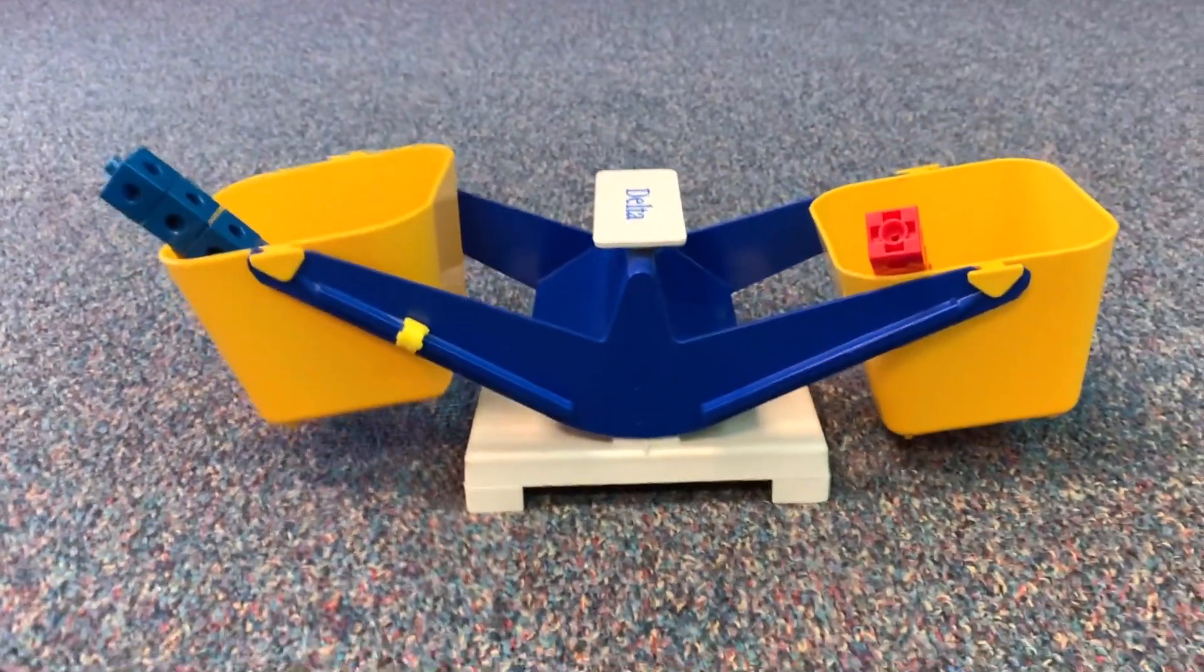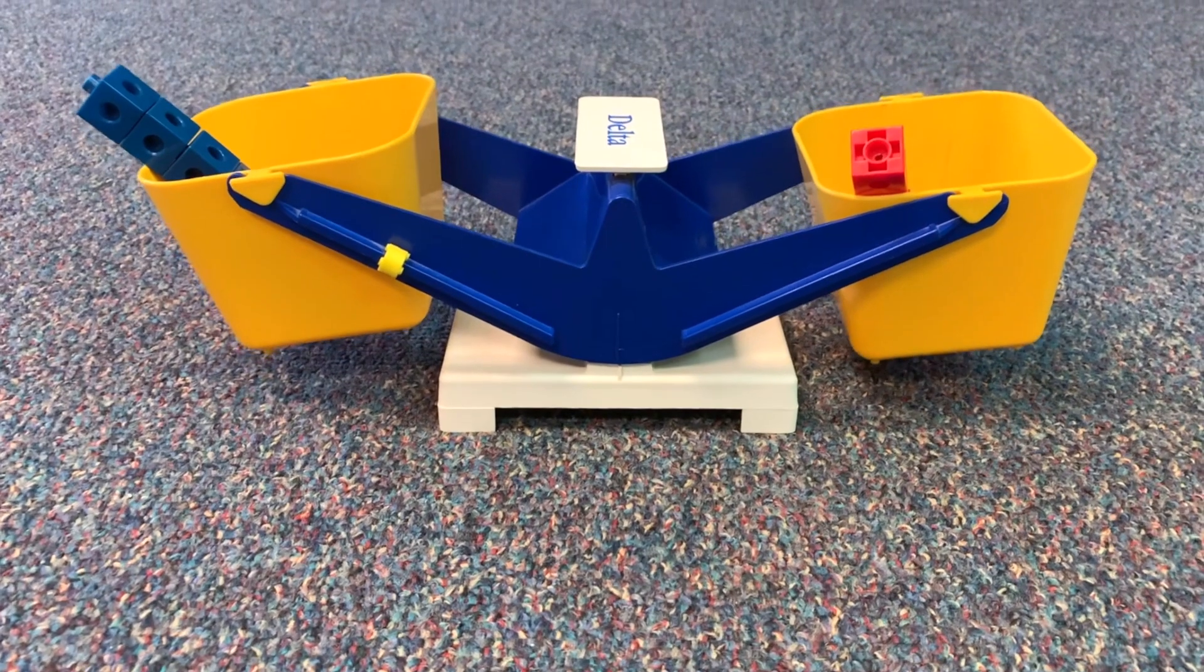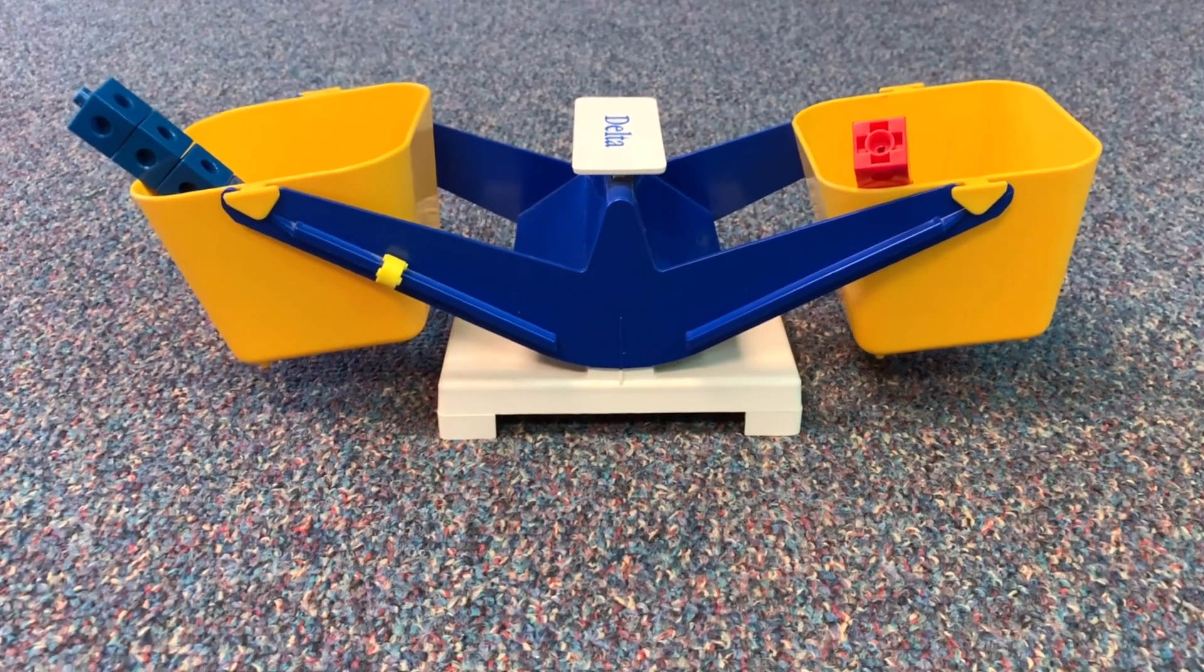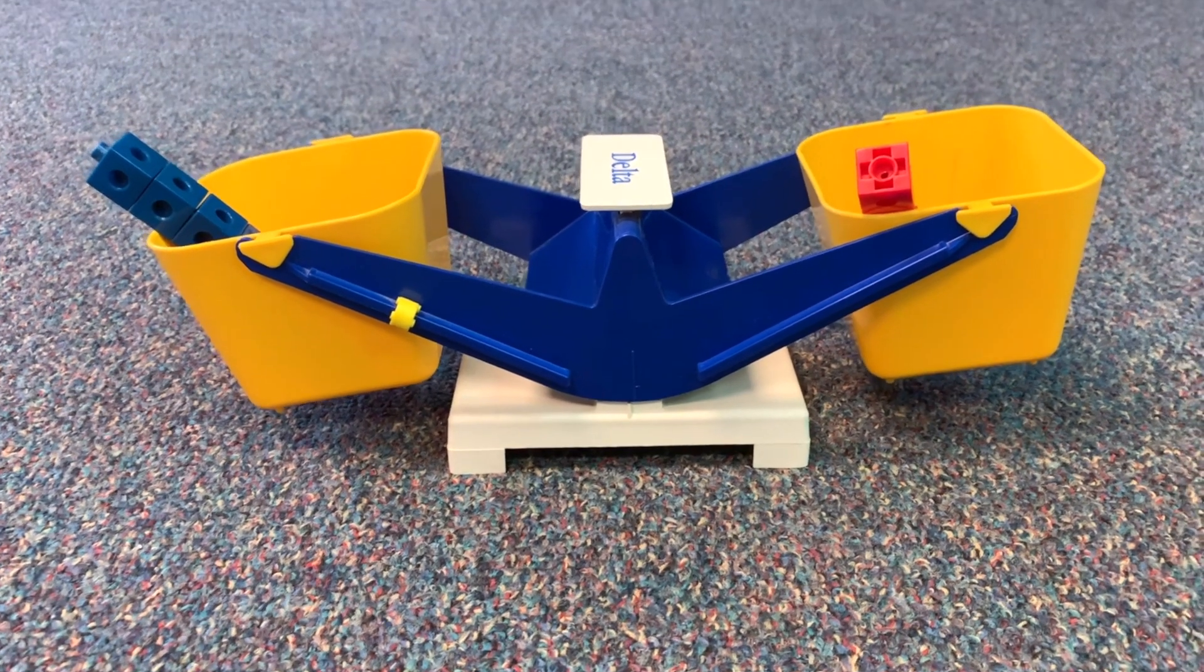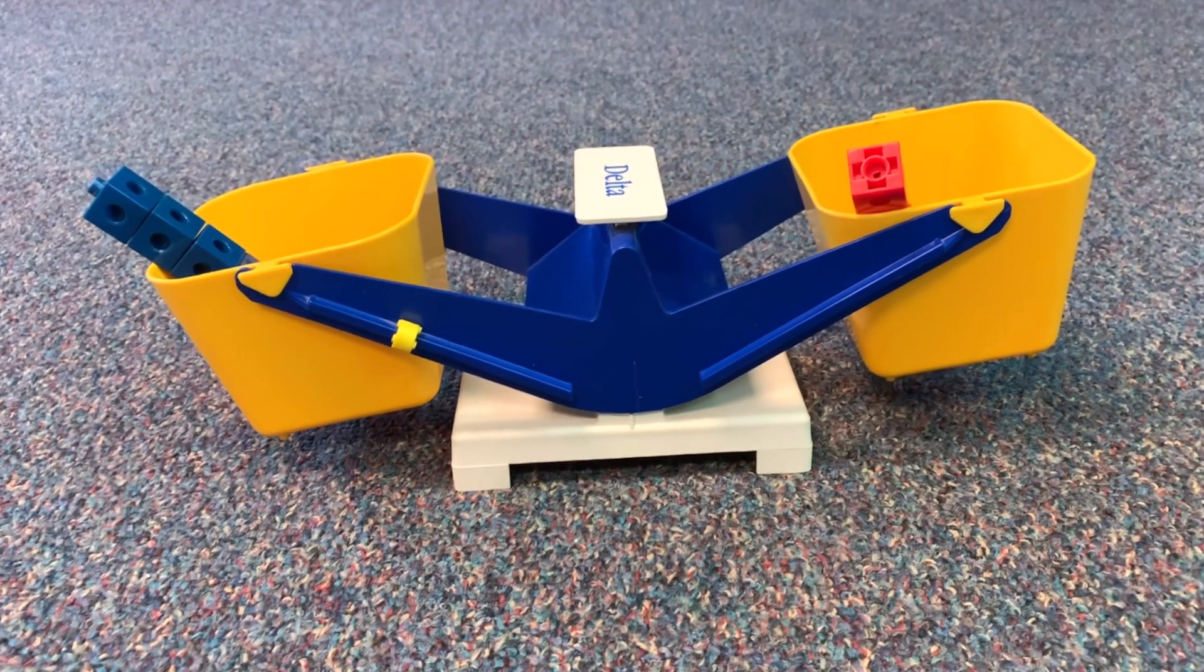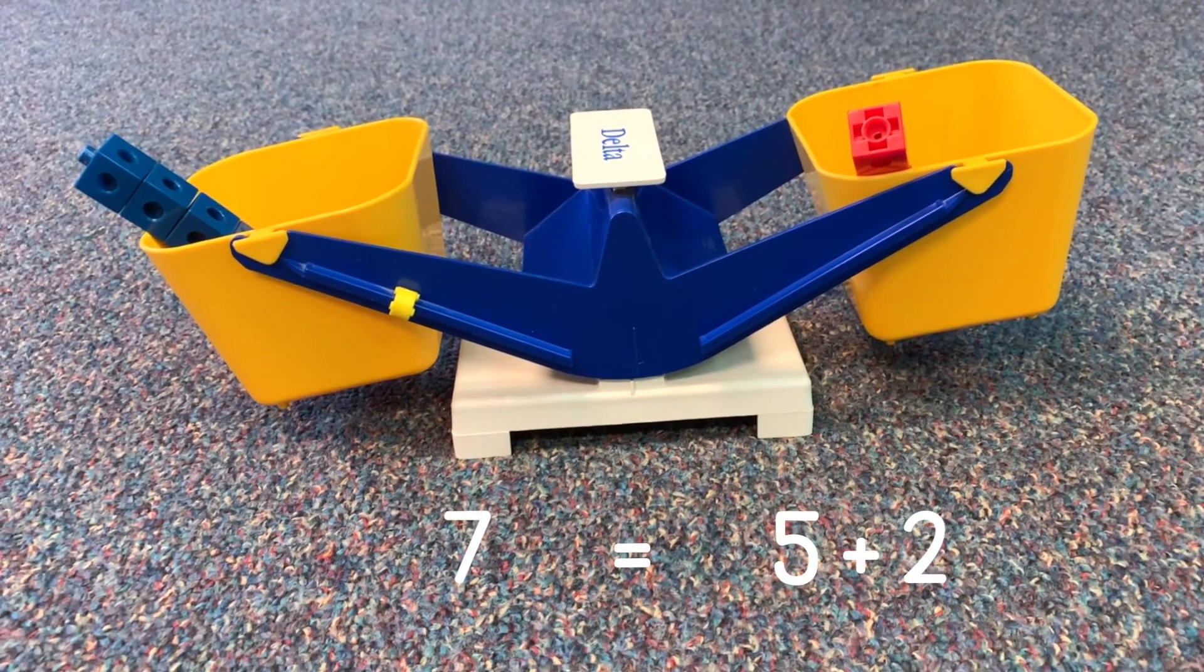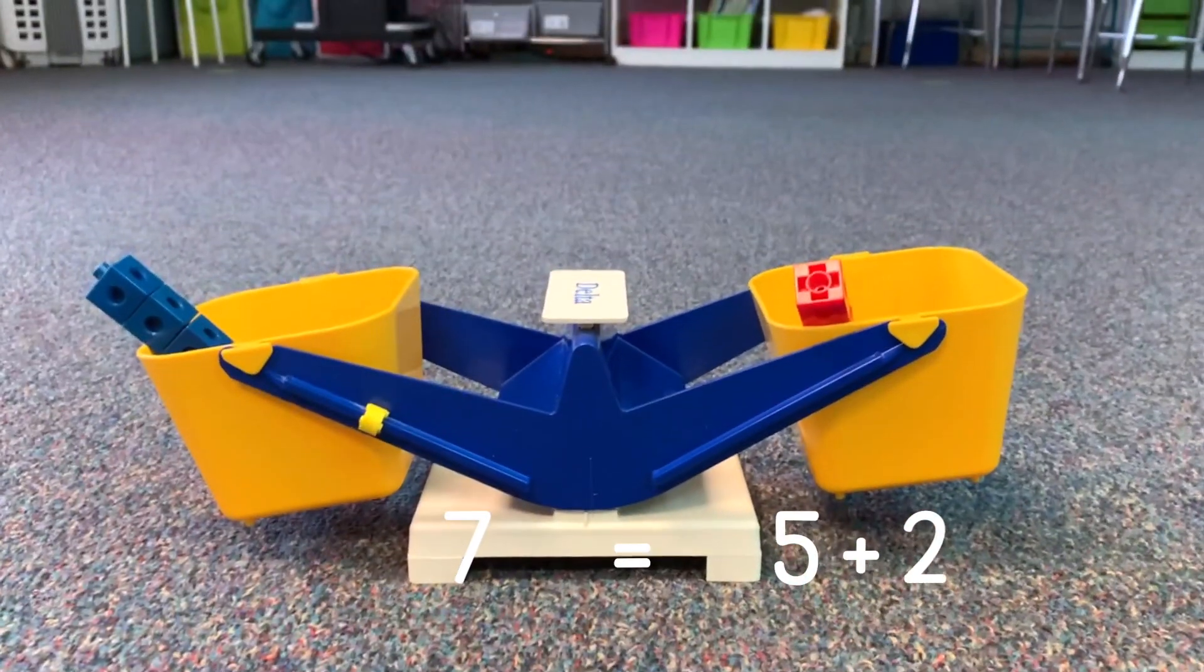Oh, here we go. It's figuring it out. And I see that that line is stopping in the middle. So those have an equal weight. Seven is equal to five plus two.